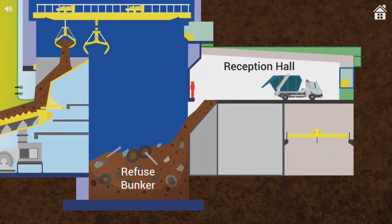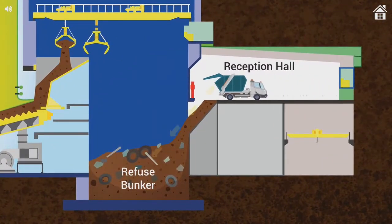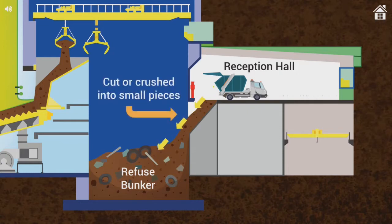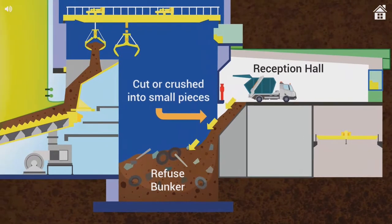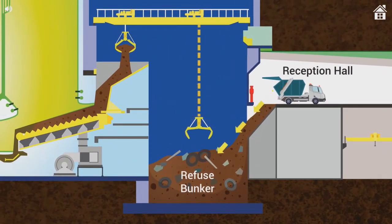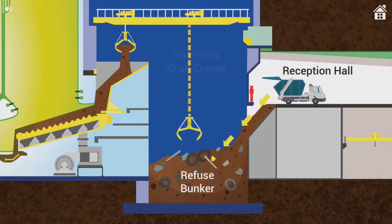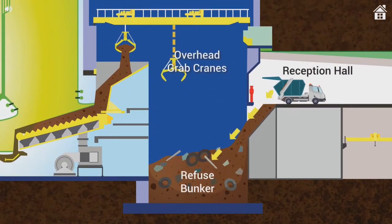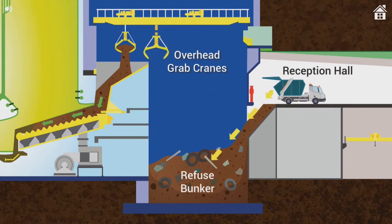Refuse brought to the plant is weighed and then discharged into the refuse bunker. Bulky waste such as tree trunks and furniture are cut or crushed to small pieces. The refuse is mixed thoroughly in the bunker using overhead grab cranes and then charged into the furnaces from the top.